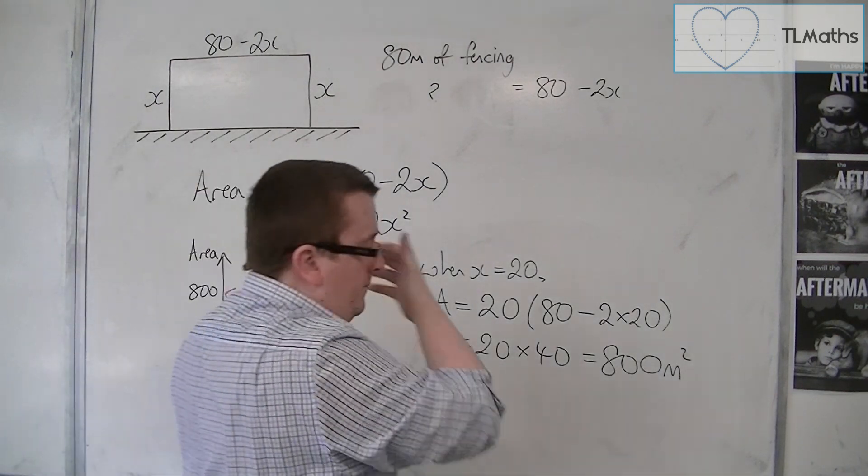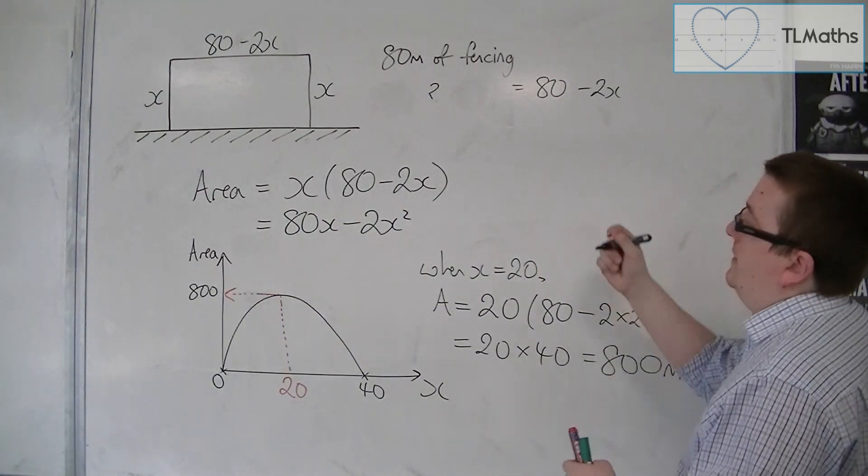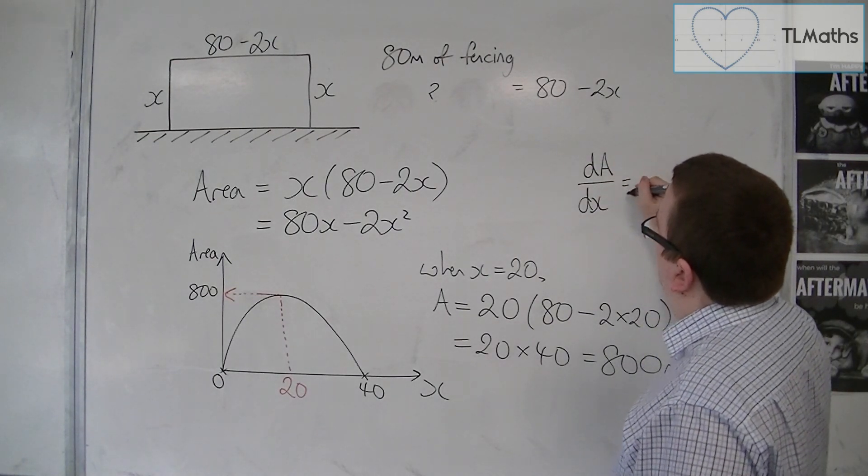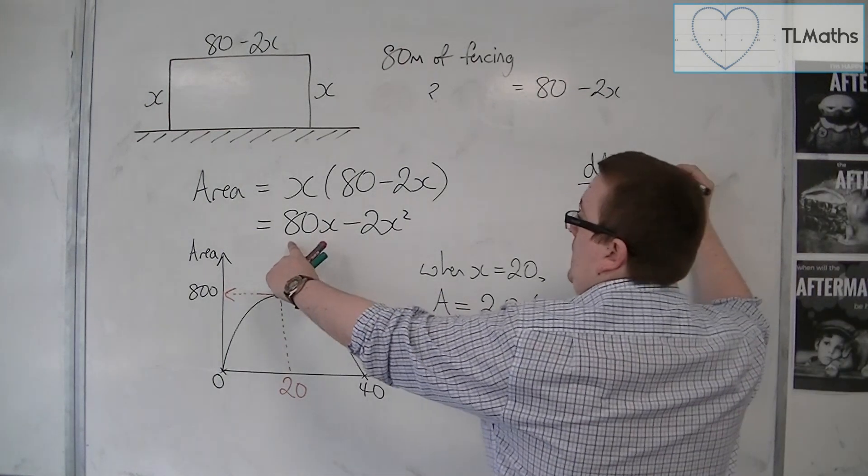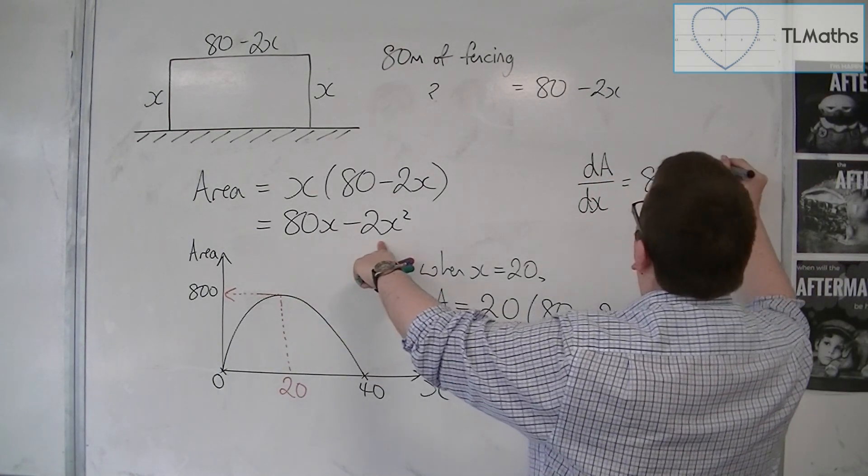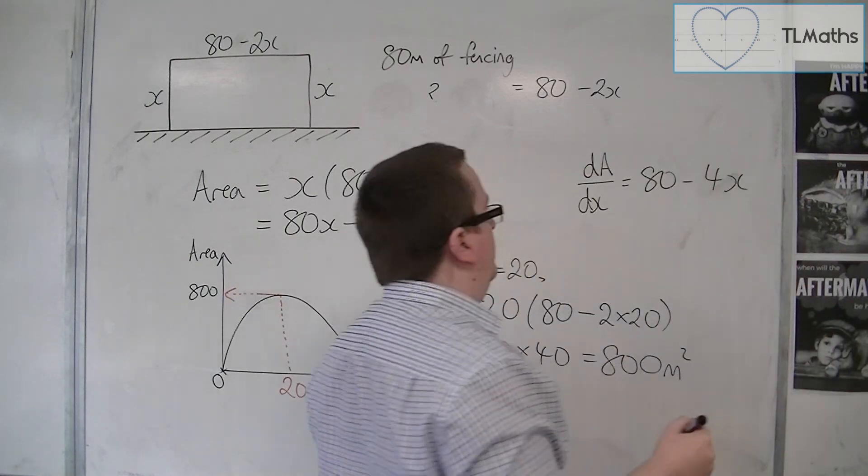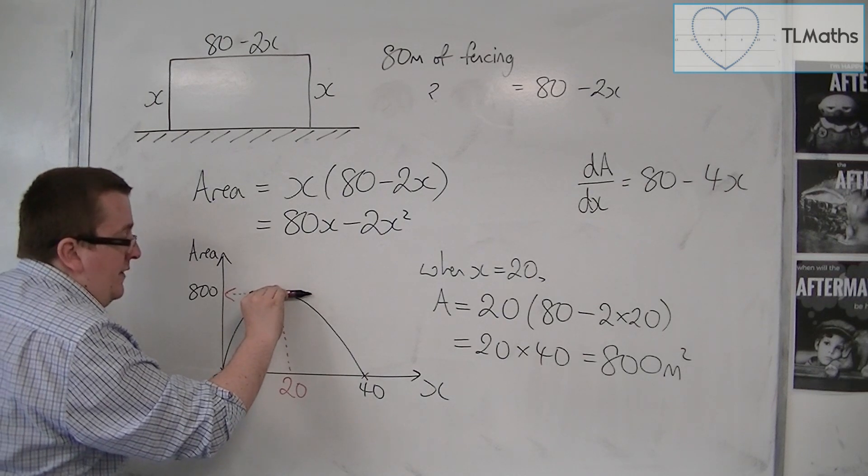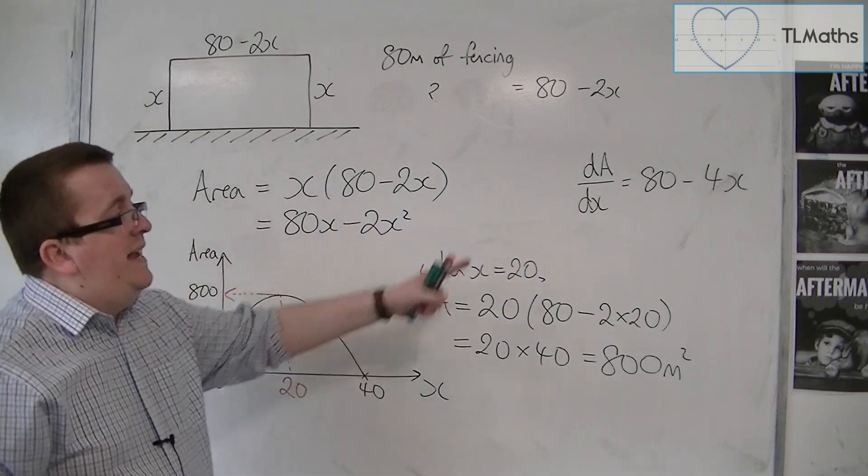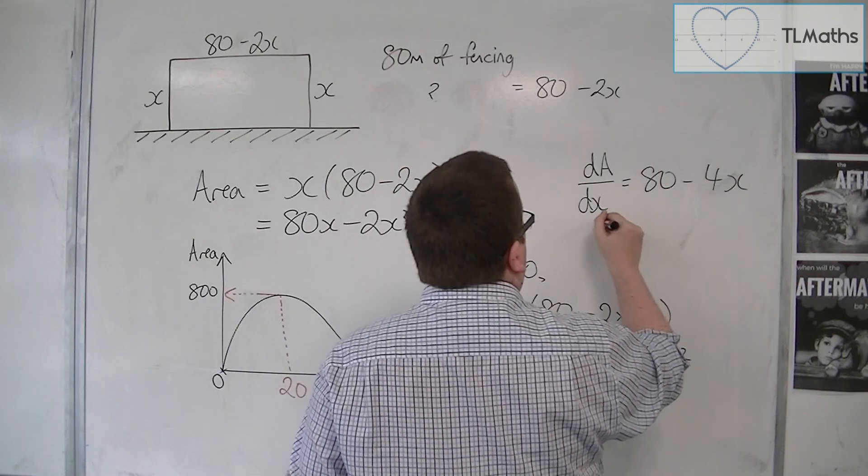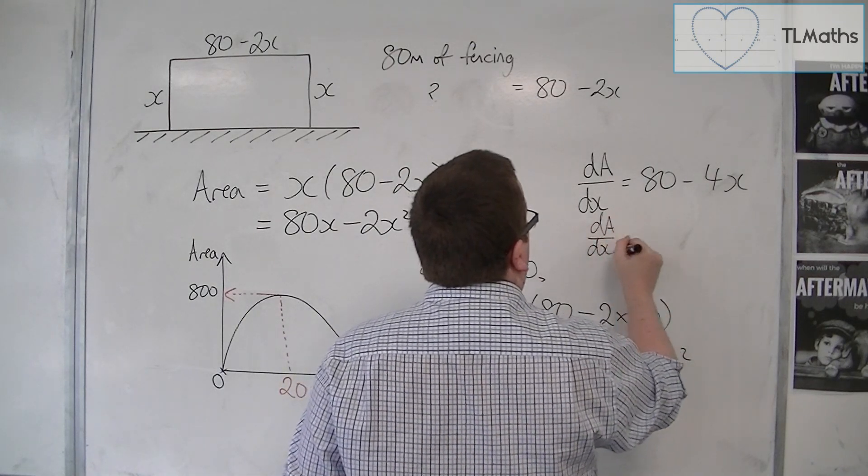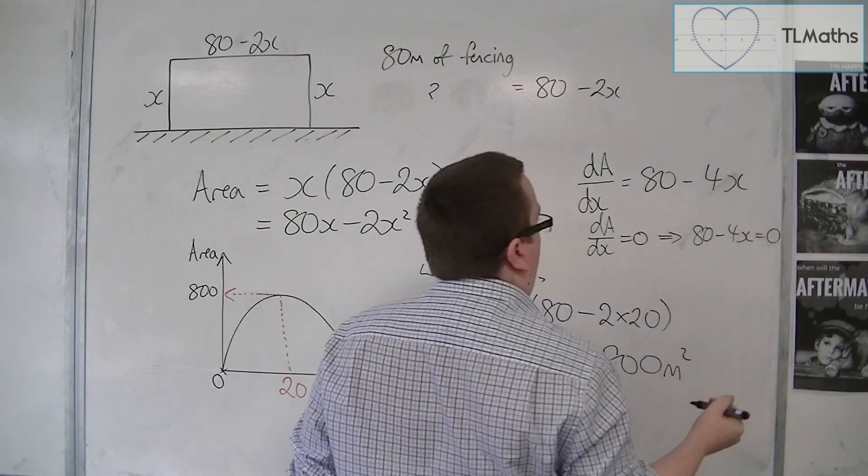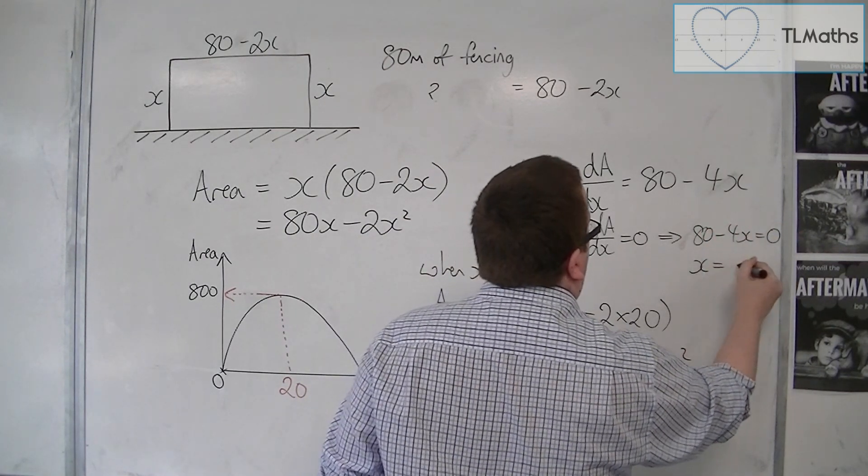So we could effectively have differentiated the area, so find dA by dx, which would be 80 take away 4x. And then that is where the gradient is 0, and so dA by dx would be 0 at that point. So dA by dx equals 0 would imply that 80 minus 4x is 0, and so x would have to be 20.